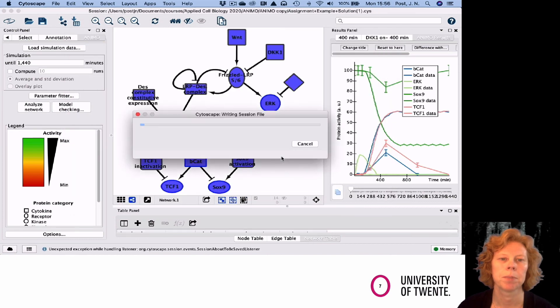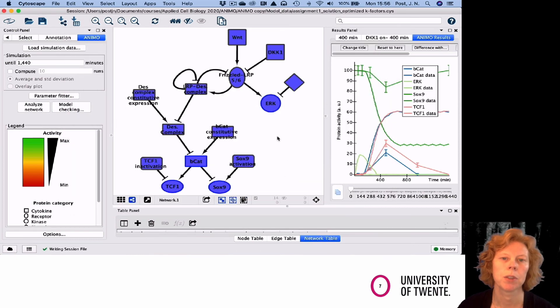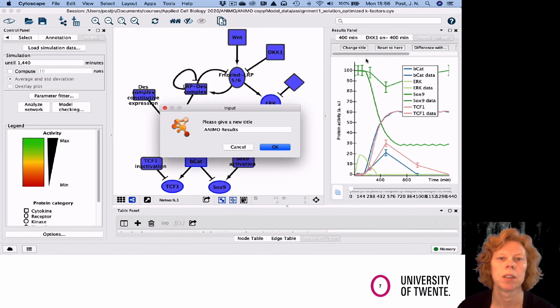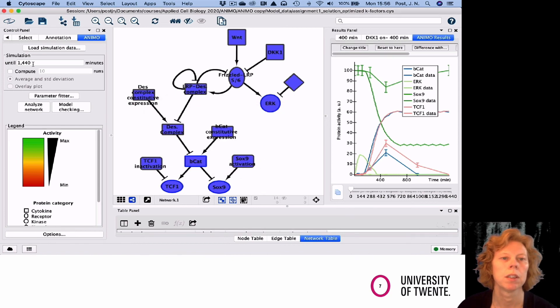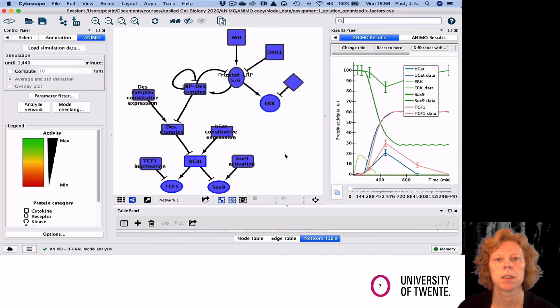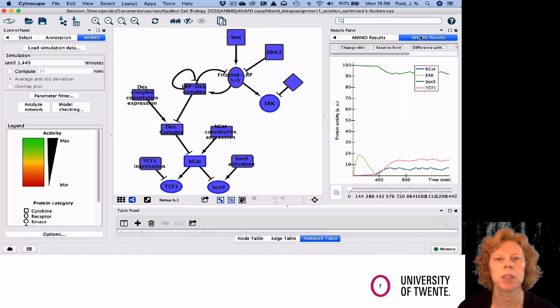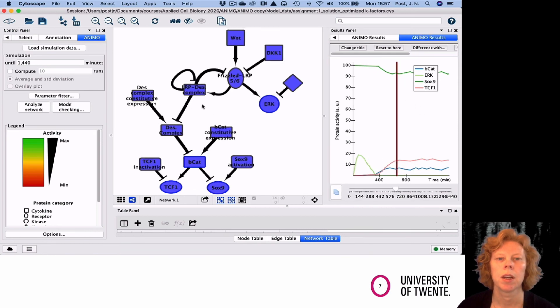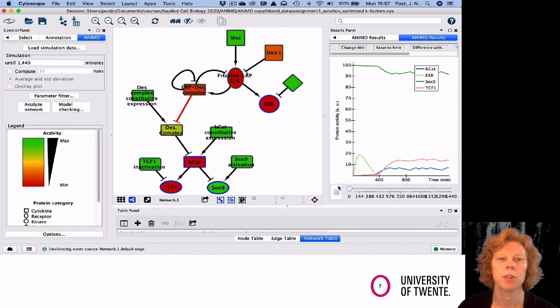After I've done that, I want to run my simulation again with my optimized k values. This was the previous one, I'm going to ignore that. So I'm going to analyze the network again. Then in my new data set, you can see it's very changed. You can slide through the data and see how it changes the network.